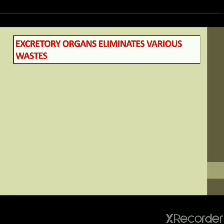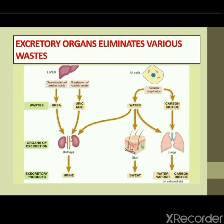Some excretory organs eliminate various waste products. The liver produces urea and uric acid as nitrogenous waste: urea is formed by the deamination of amino acids, and uric acid is formed by the breakdown of nucleic acids or DNA. Body cells undergoing cellular respiration produce carbon dioxide and water; the carbon dioxide is eliminated through the lungs and the water is eliminated in the form of sweat through the skin surface.